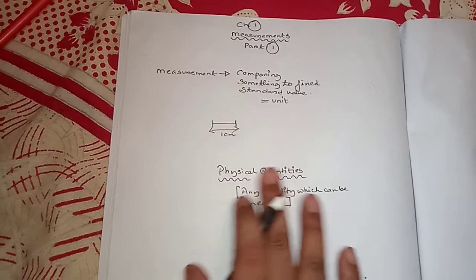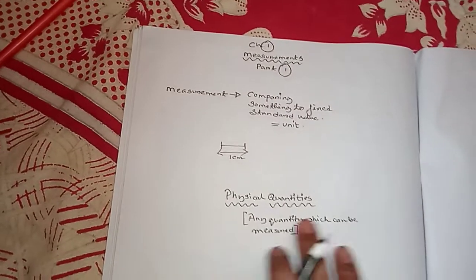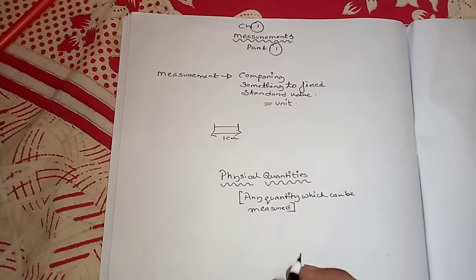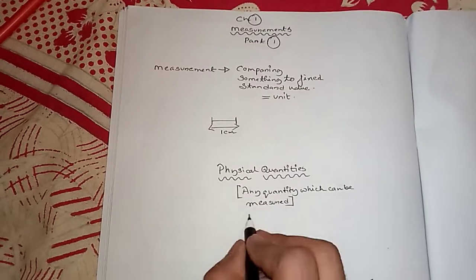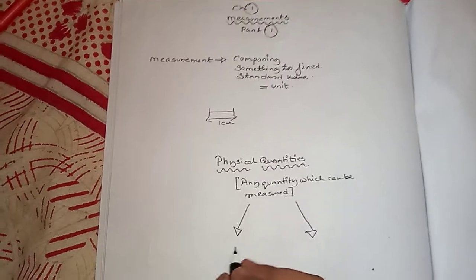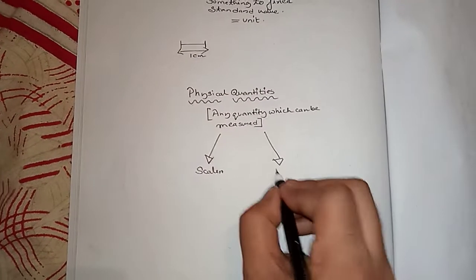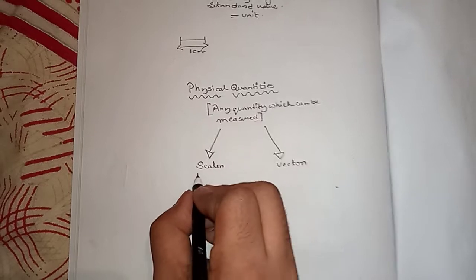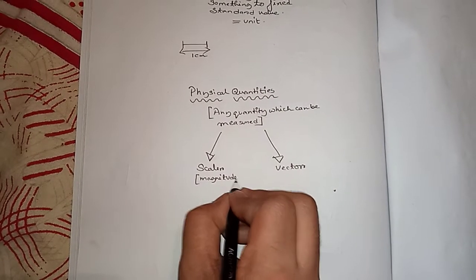Now let's come to the next part: what are physical quantities? Any quantity which can be measured is known as a physical quantity. Now if you are enthusiastic enough to know more physics, we have two kinds of physical quantities — one we call scalar and the other we call vector. Scalar quantities only have magnitude, and magnitude is nothing more than a value.